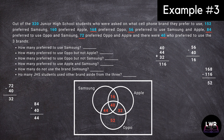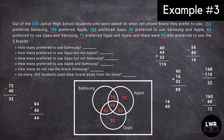For the Apple mobile phone users, we will add 40, 16, and 32, that resulted in 88. We will subtract 88 from 160 to get 72. To complete the number of cell phone users who preferred Samsung, we will add 16, 40, and 44, which is equivalent to 100. Then we will subtract 100 from 152 to get 52.